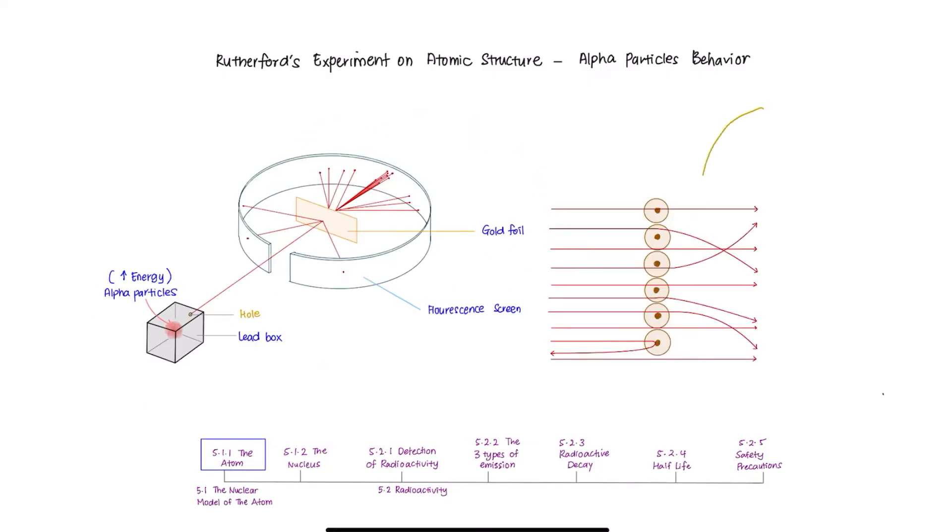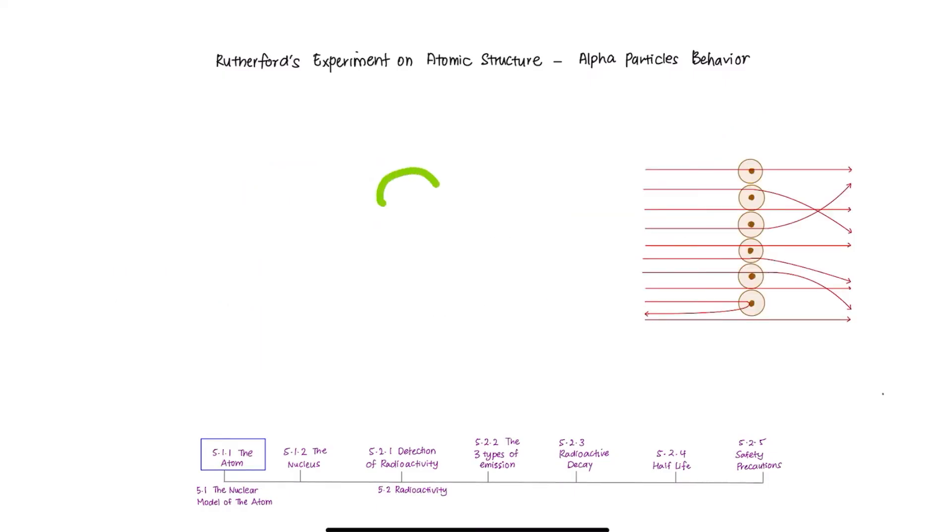This is the representation that you usually come across in your textbooks or you will see in exam questions. So, now, how can one understand the structure of an atom better from this experiment?